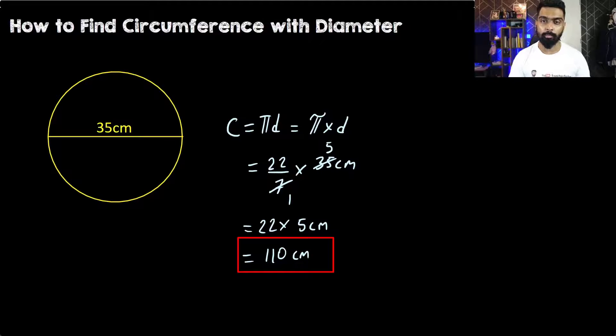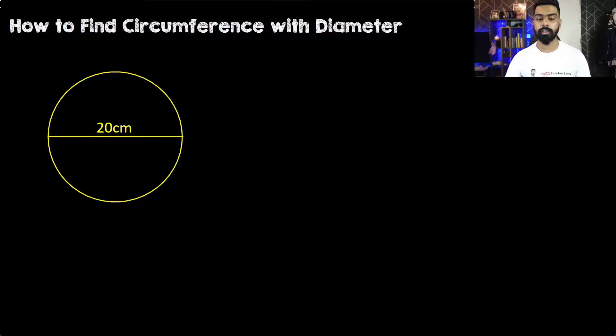Let's solve one more question. In this question, we see that the diameter is 20 centimeters. Again, let's start with the formula: C = πd, circumference is πd.